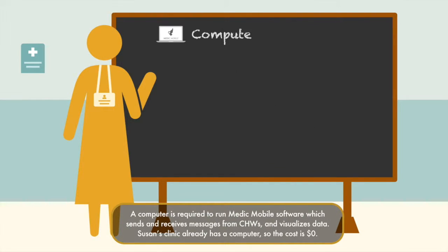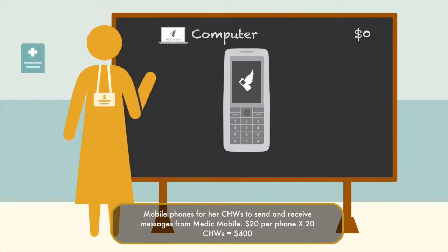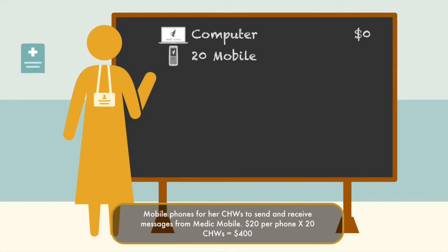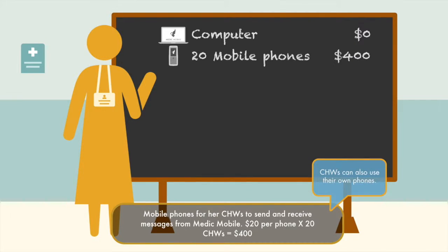A computer is required to run MedicMobile software, which sends and receives messages from community health workers and visualizes data. Susan's clinic already has a computer, so the cost is zero. Mobile phones for her community health workers to send and receive messages from MedicMobile: $20 per phone times 20 community health workers equals $400. CHWs can also use their own phones.